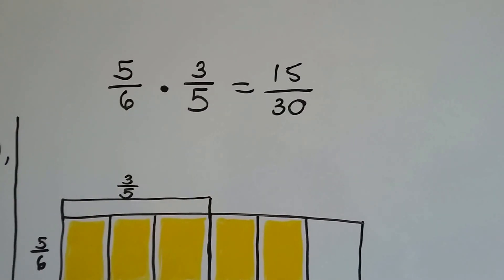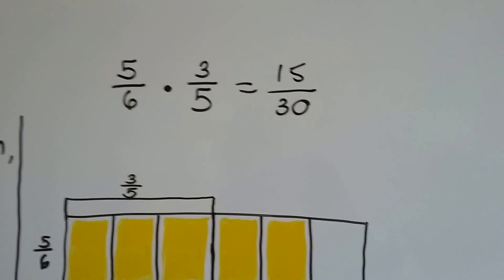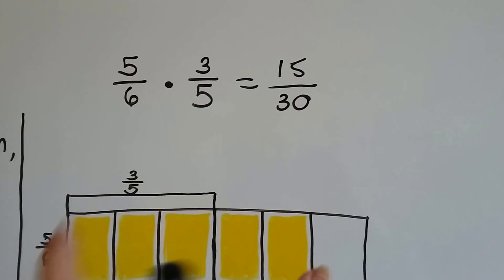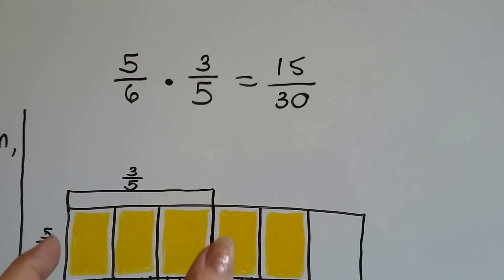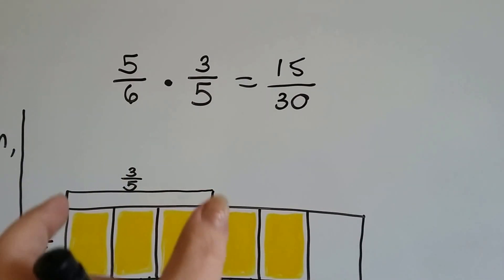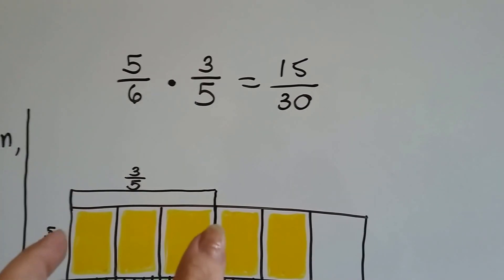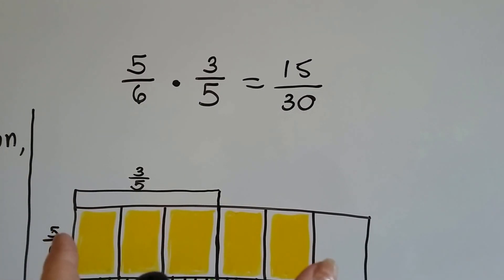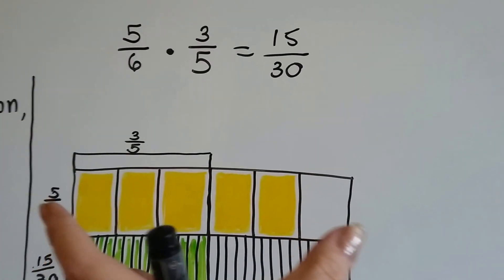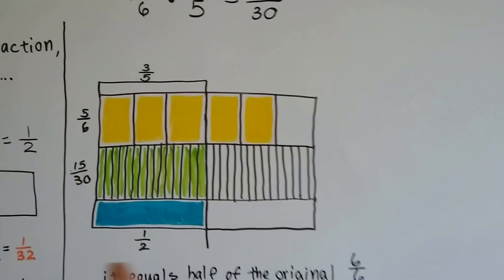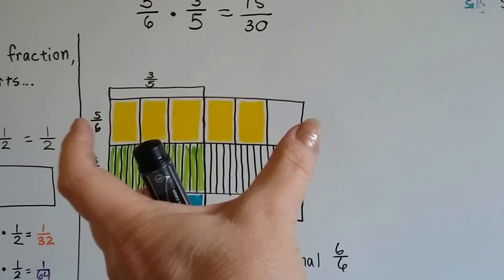We're going to multiply it by 3/5. So what we're doing is we're turning the 5/6 into fifths and we're taking three of them. See? So 3/5 of 5/6 is half of the 6/6.